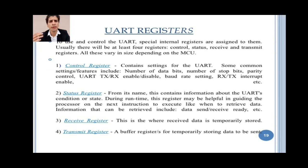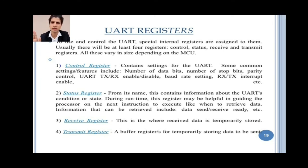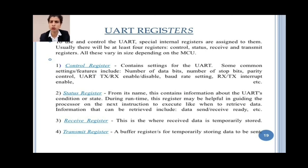The control register contains settings for the UART. The status register contains information about the UART's condition or state. The receive register is where received data is temporarily stored. The transmit register is a buffer register for temporarily storing data to be sent.